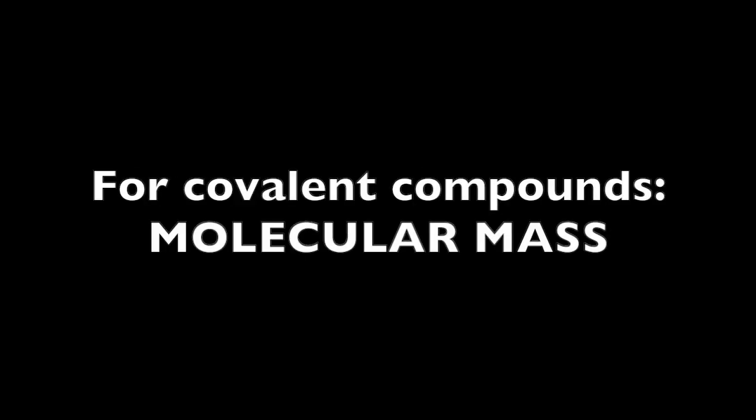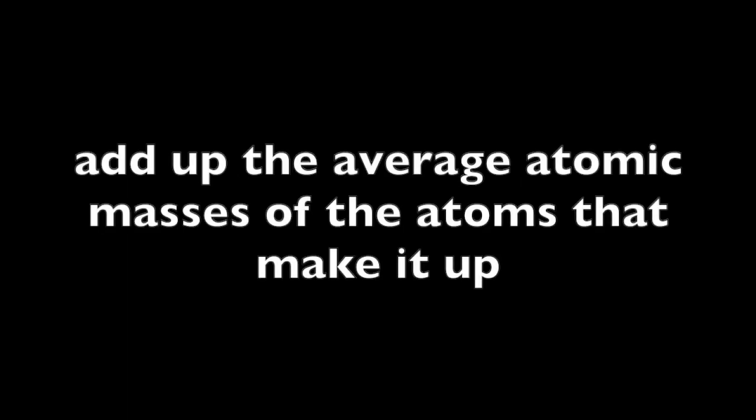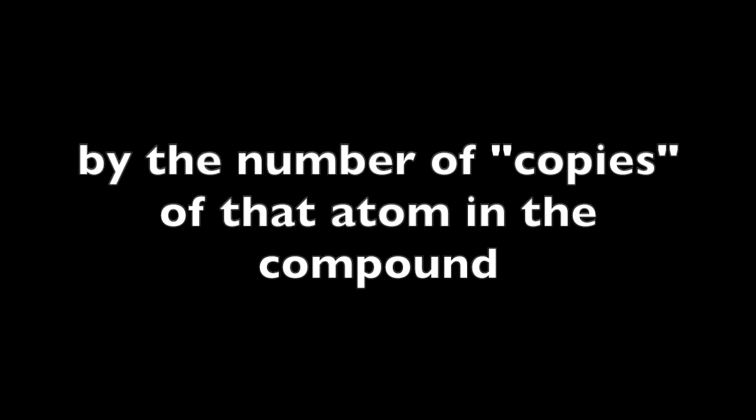We use the term molecular mass or formula mass when we want to find the mass of a substance made from multiple atoms — in other words, when we want to find the mass of a compound. Which term we use depends on the type of compound: for covalent compounds we talk about molecular mass, and for ionic compounds we talk about formula mass. To calculate the molecular or formula mass, we add up the average atomic masses of the atoms that make it up, multiplying each by the number of copies of that atom in the compound.